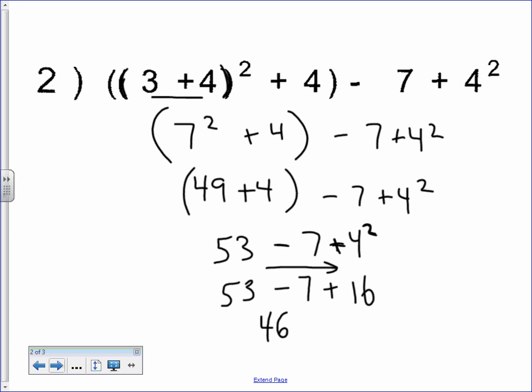All right. Yes. Plus 16 is 40, 50, 62. Again, I just had the creeping suspicion I did something wrong. But 3 plus 4 is 7. 7 to the second power is 49. 49 plus 4 is 53.